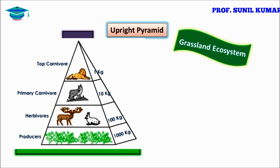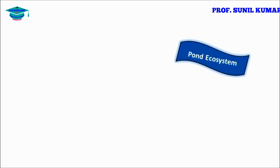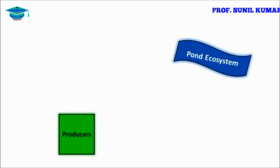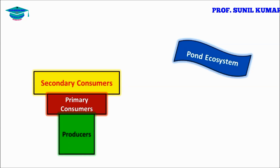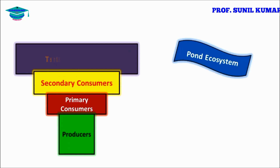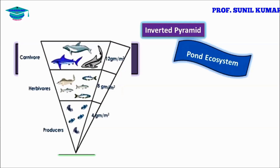In a pond or aquatic ecosystem, the producers are less and the highest will be the tertiary consumers, meaning the pyramid of biomass in the aquatic system is always inverted. In the ocean it is also inverted.